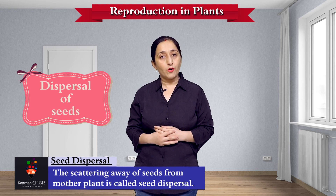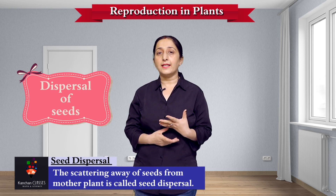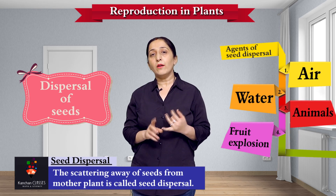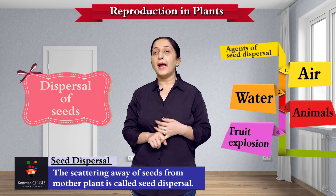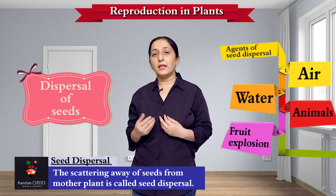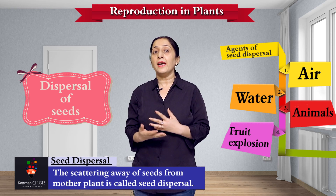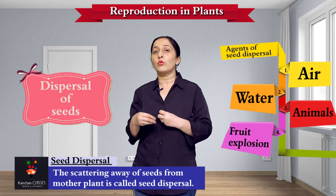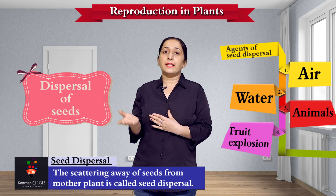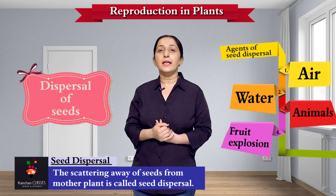And what are the agents of seed dispersal? Who carries out seed dispersal? Wind, water, and animals are the agents of seed dispersal — they help in seed dispersal. Through photos in this video, I will make it clear which seeds are dispersed by water, wind, or animals.